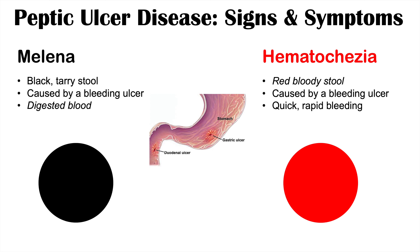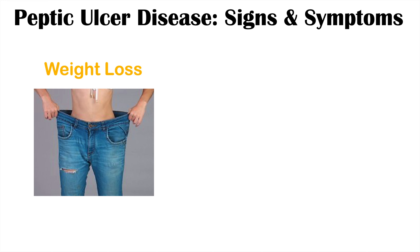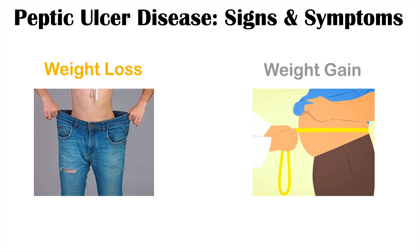Other signs and symptoms of peptic ulcer disease include weight loss and, on the opposite end, weight gain. These occur depending on the type of ulcer. If a patient has a gastric ulcer, eating exacerbates symptoms, so patients often try to avoid eating, leading to weight loss. If they have a duodenal ulcer, eating improves symptoms, so patients may continue eating to relieve their symptoms, which can lead to weight gain. So the type of ulcer is one factor that determines whether a patient experiences weight loss or weight gain.